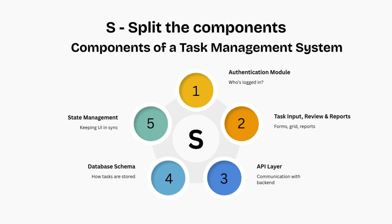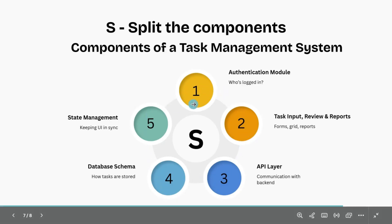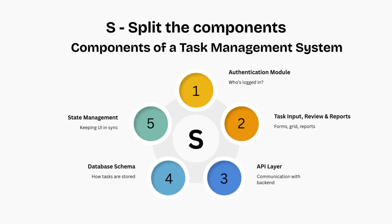Notice what just happened — instead of one big vague prompt like 'build a task manager,' you now have five specific, focused components. And here is the magic: you can now vibe code each component individually, one at a time, with clear, focused prompts.